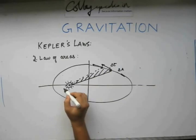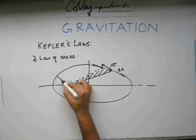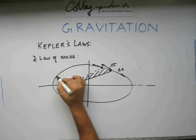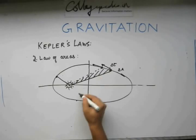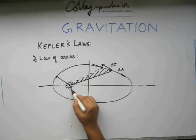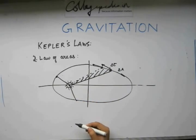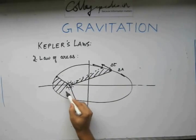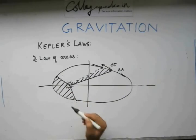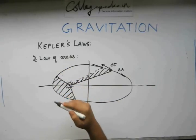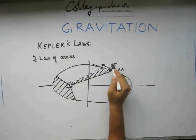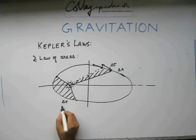We say that suppose this planet is here at a certain point of time and it reaches, say here, after the same time interval, this is another area we sweep. This area, if swept in time delta T, which is same as this delta T, will be equal to delta A again. This is the definition of the law of areas.